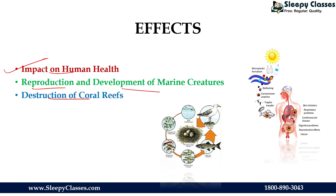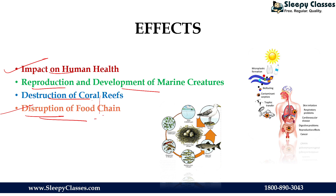Next is the destruction of coral reefs. Coral reefs are very essential for the aquatic ecosystem and for sea creatures. Their destruction adversely affects the life of aquatic animals. Then there is disruption of the food chain, which is a very obvious consequence. The food chain is disrupted because toxic chemicals start with producers, then pass to primary consumers, secondary consumers, tertiary consumers, and predators. The whole food chain is disrupted and it creates adverse impacts.